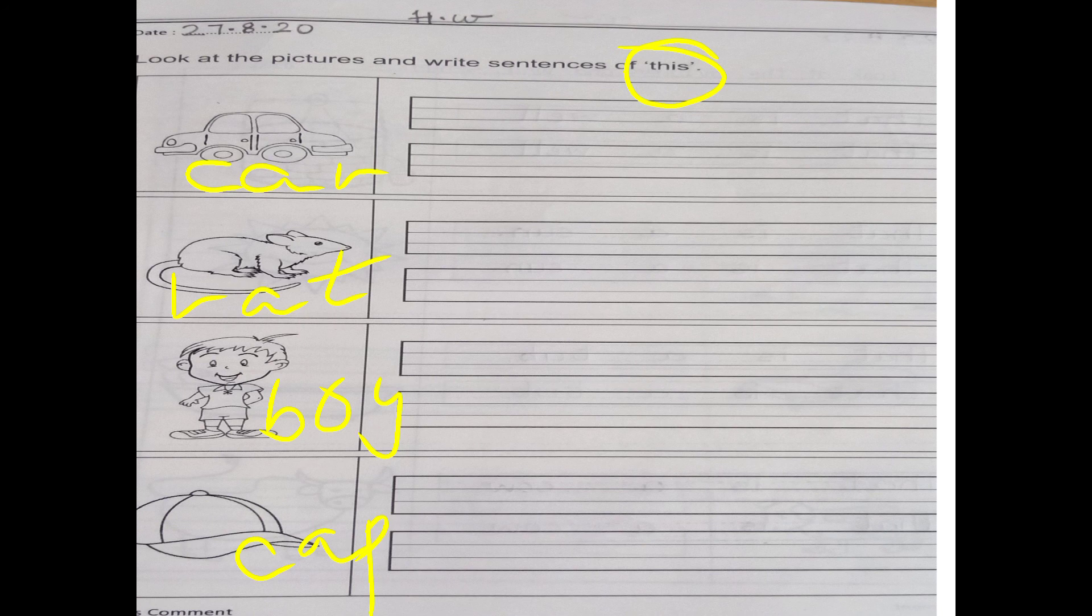Abhi aapko kya karna hai? 'This' use karke sentence banana hai. Ab one thing humare near hai toh jab one thing humare near hoti hai toh hum bolte hai 'this is'. Toh hum sentence kaisi likhengi? This is a car. What we will write? This is a car. Aya samaj me aapko? Kaisi likhengi aap? This is a car.